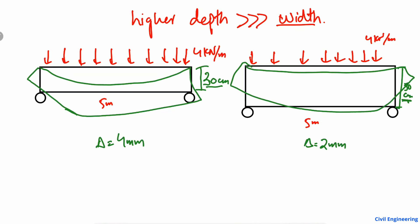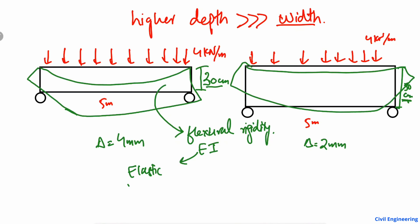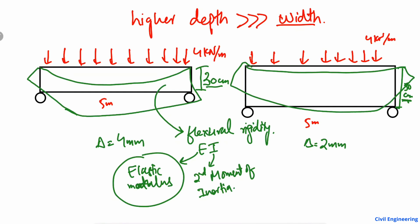Now, what is the main reason behind the lower deflection for a higher depth beam? The main reason is that the deflection, or the resistance to load of a beam, depends on the flexural rigidity of the beam. Flexural rigidity is EI, where E is the elastic modulus of the material from which the beam is made, and I is the second moment of inertia of the cross-section of the beam.